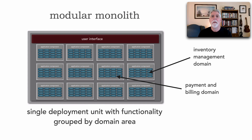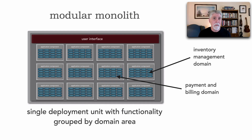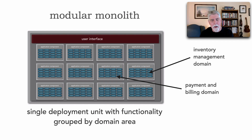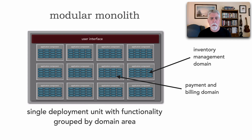If we look at this in code, what we find is that in our namespace, package structure, or directory, the highest level node actually describes the domain. Whereas with the layered architecture, that highest level node — after com.myapp.whatever — was the layer: business, presentation, and then everything following. So it's a good way of thinking about the modular monolith from an implementation perspective.